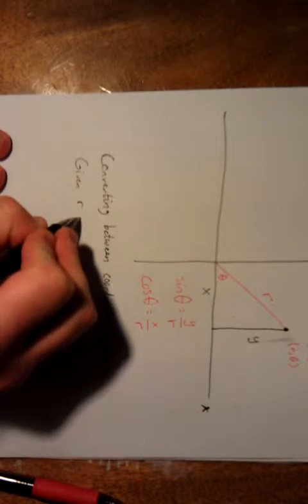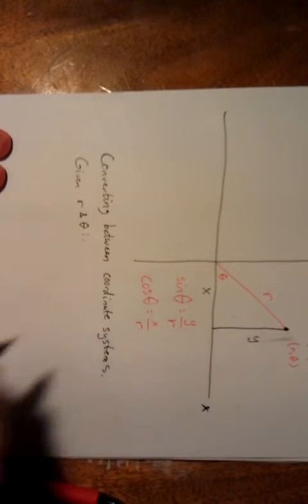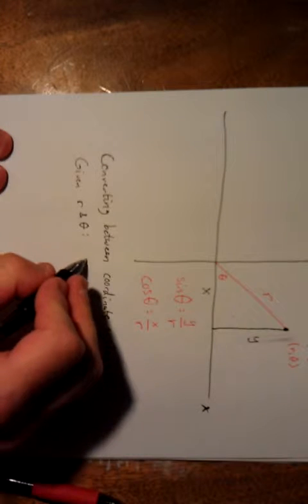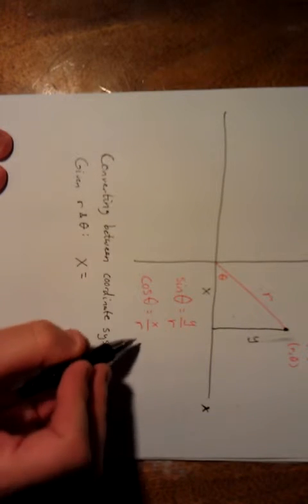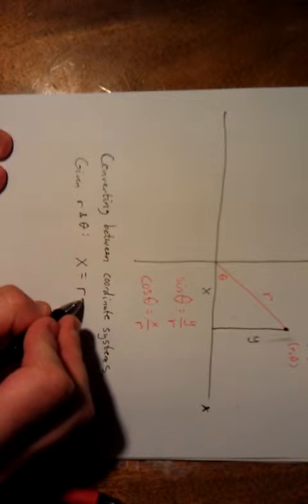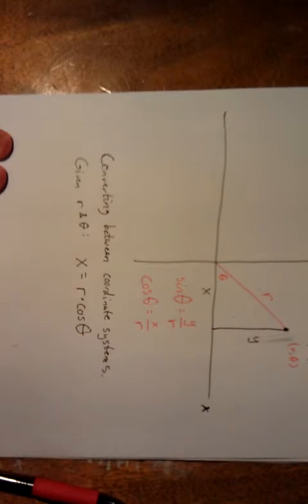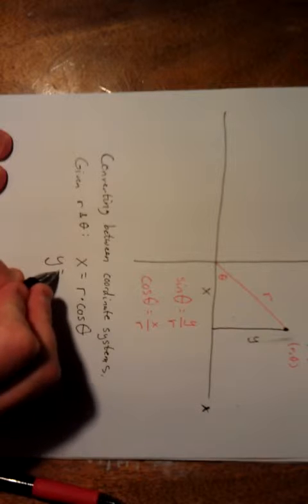If we are given polar coordinates, so given r and theta, the way that we calculate what x and y are equal to is from these two formulas. x would be equal to, if we multiply both sides of this by r, we get r times the cosine of theta.